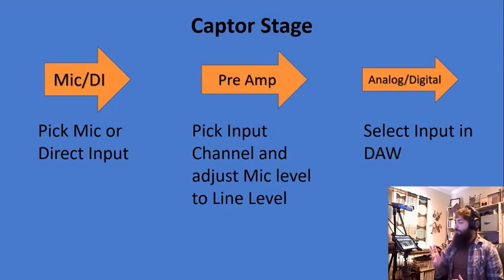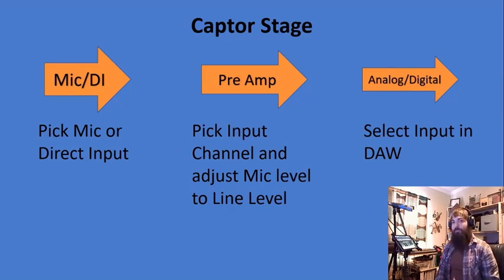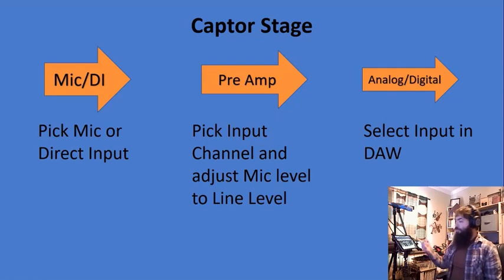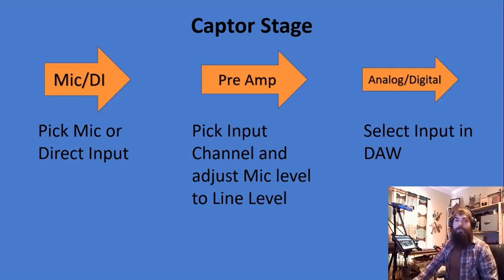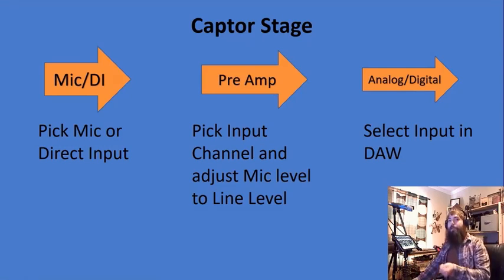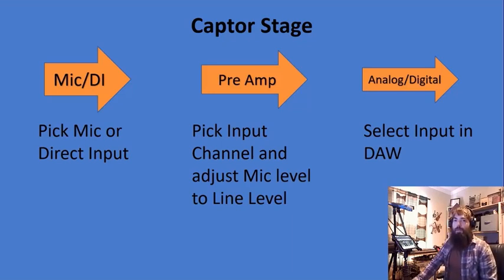Next, once we've picked our microphone during the capture stage, we're going to want to plug it in and get it from mic level up to what we call line level. We're going to use a preamp to adjust the level — either within our mixer or a standalone preamp — anything that's going to boost that signal from mic level to line level. Then we're going to want to convert it to digital so that Pro Tools can recognize it, using an analog to digital converter.